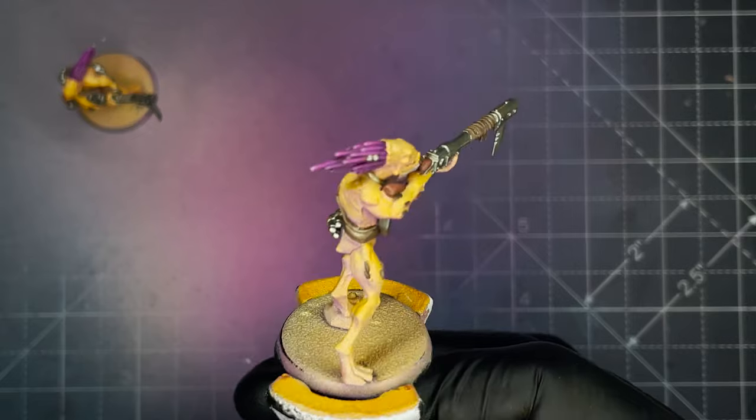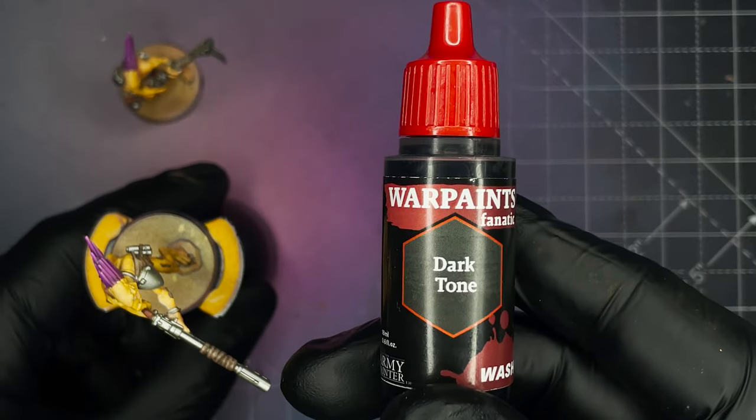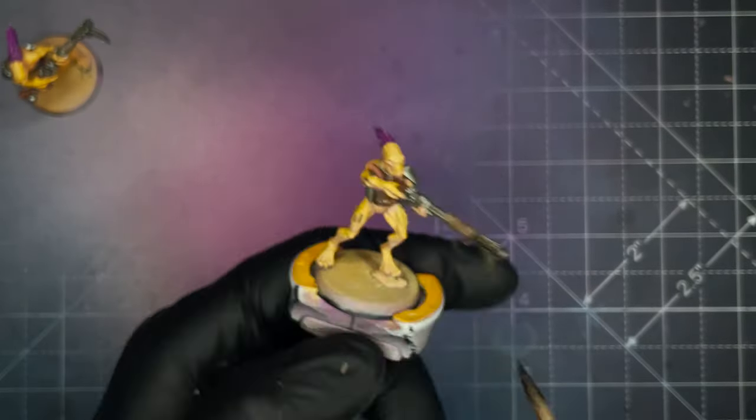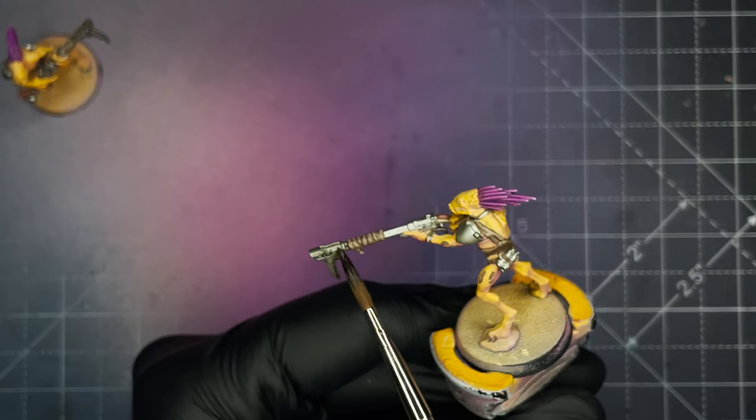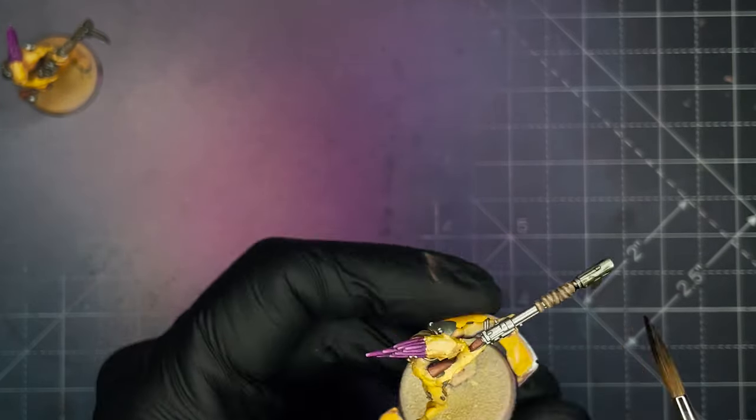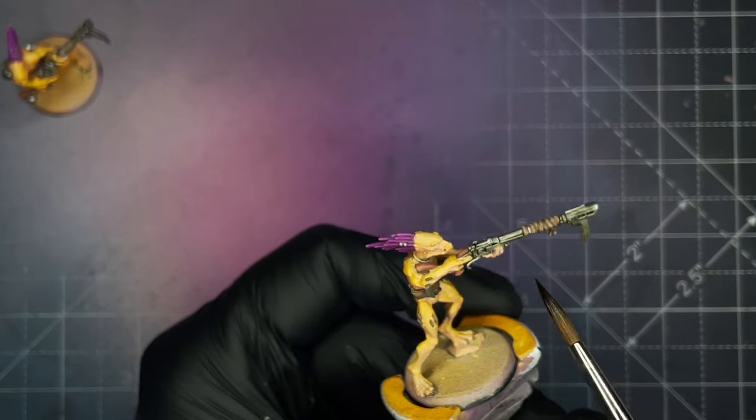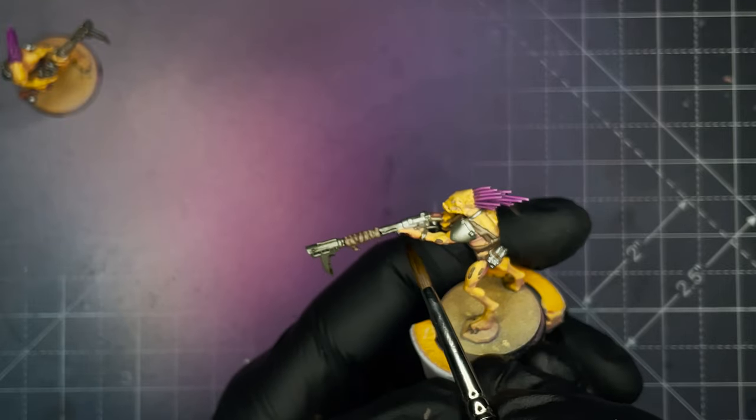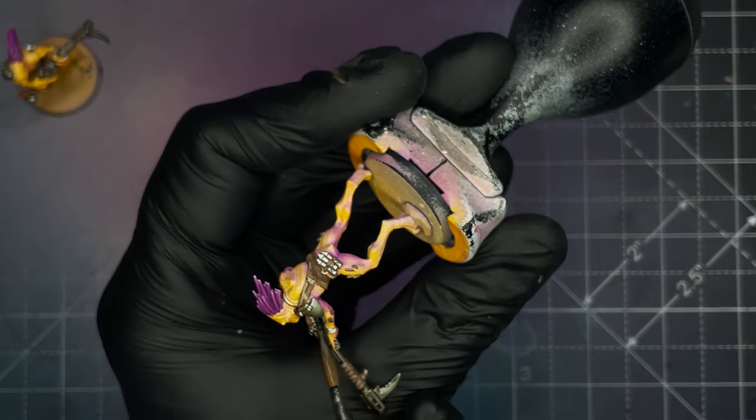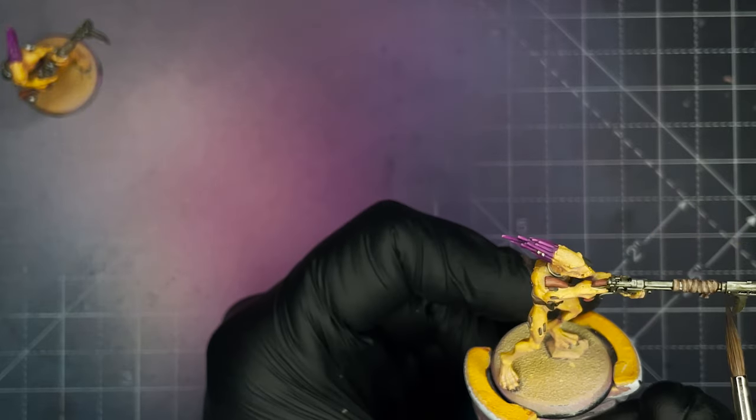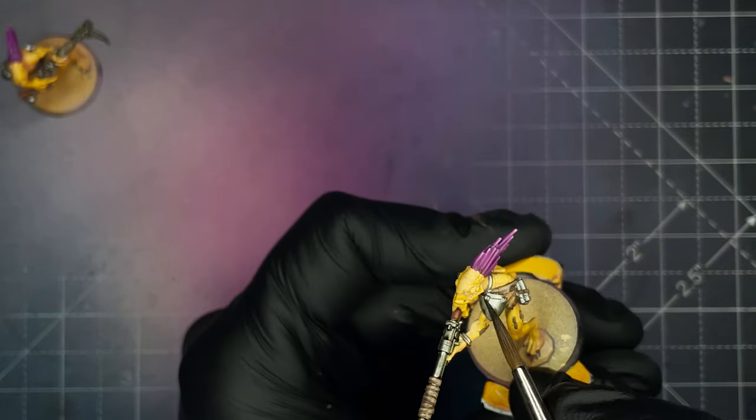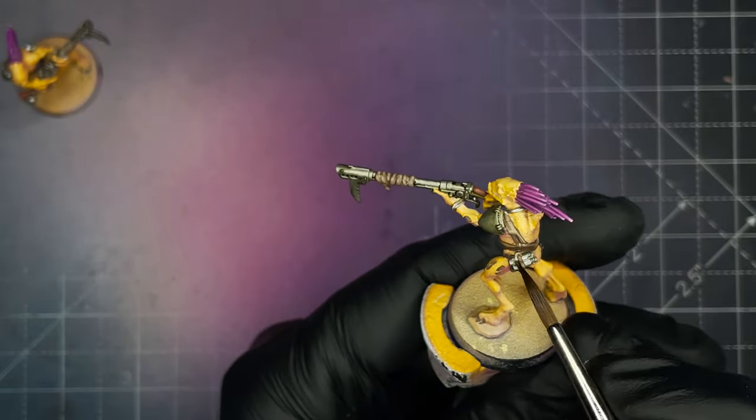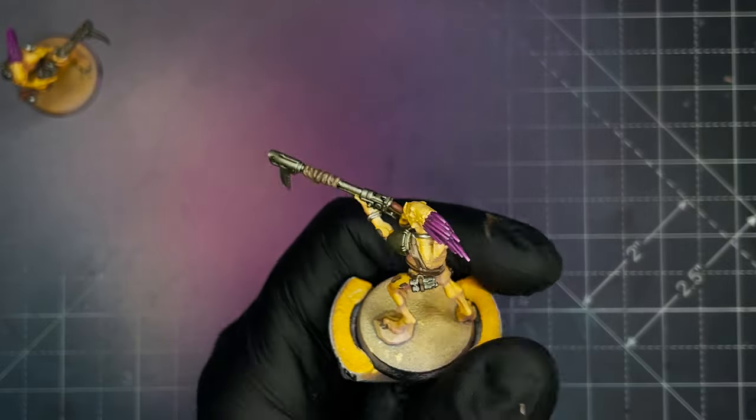Next up we're going to start applying some shade to the model, starting off with Army Painter Dark Tone. I'm going to be applying this to all the metallic areas on the model. I'm just applying one coat straight out of the bottle with no dilution. You may have noticed it here but I accidentally used Army Painter Strong Tone instead of Dark Tone which ended up turning all my metallics a brownish tint, so I did end up repainting the metallics and reapplying the correct tone.